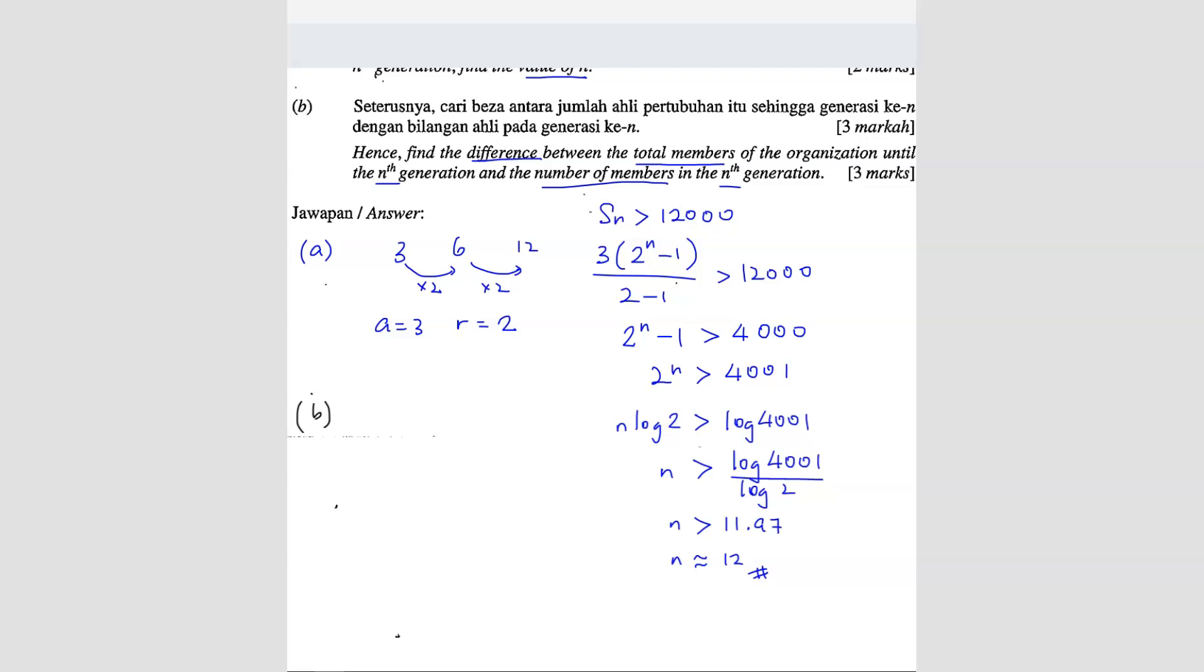Question B is asking you to find the difference. So that means the S12, the sum of all members on the 12th term, because we found 12, n equals to 12, so on the 12th term minus the T12, the number of members in the nth generation. That means the 12th generation. So they're asking you to find this.